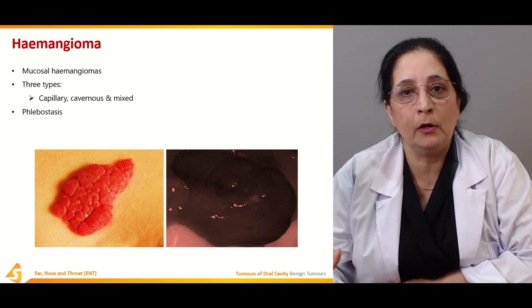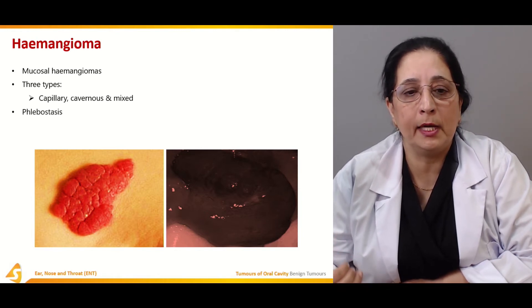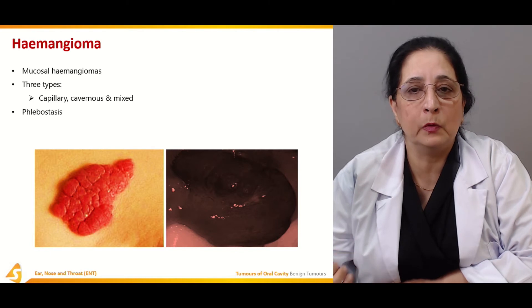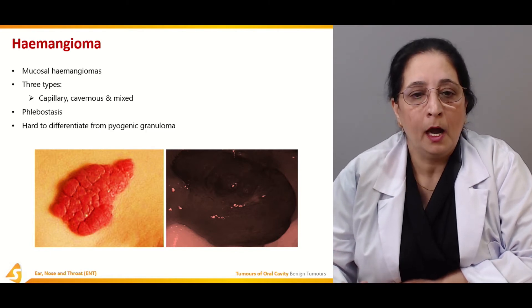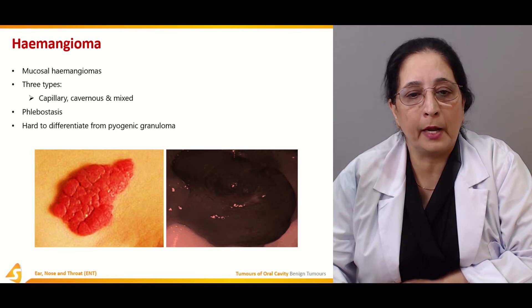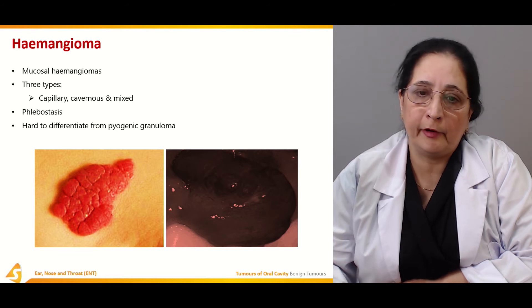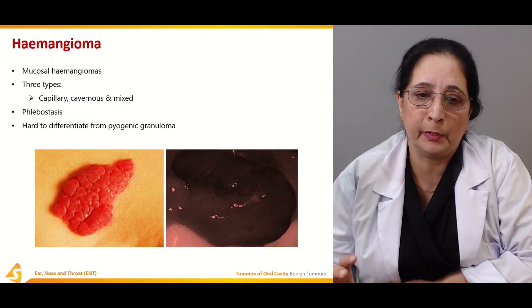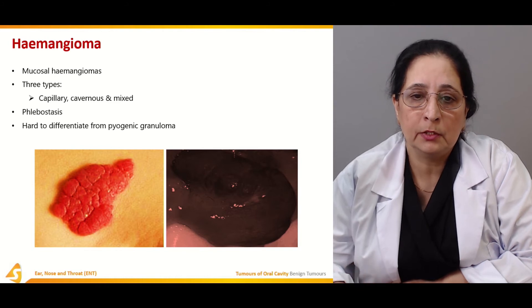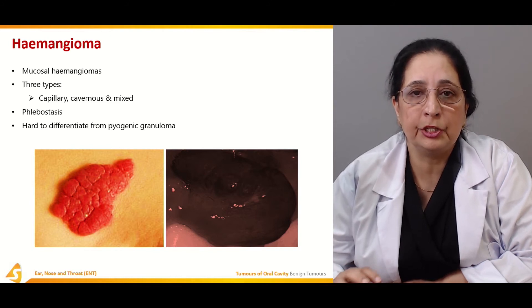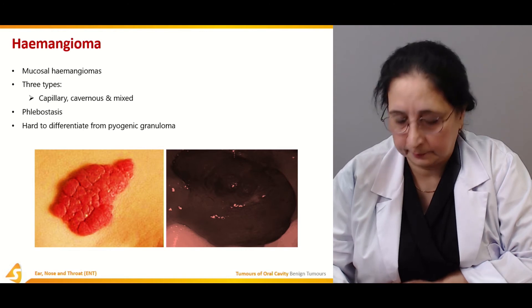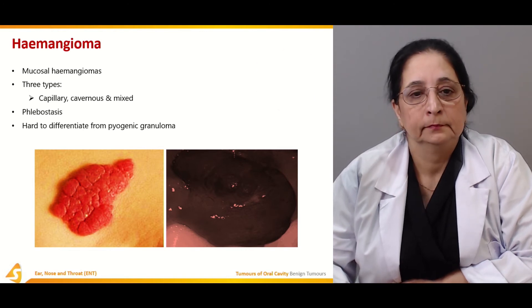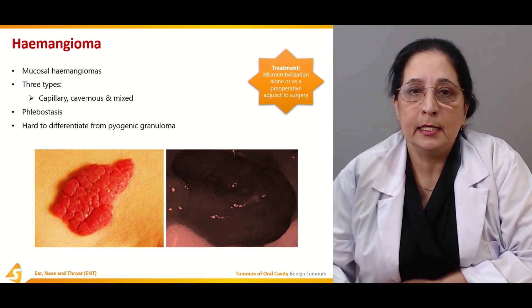There is phlebostasis — 'phlebo' is for the veins, 'stasis' is the stopping of blood in the veins. Phlebostasis is present and it is hard to differentiate from pyogenic granuloma, as both are reddish-purplish in appearance.